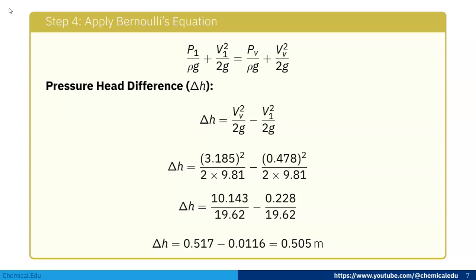Now we can apply Bernoulli's equation: P₁/(ρg) + V₁²/(2g) = Pv/(ρg) + Vv²/(2g). And z₁ = z₂ because it is horizontal. The orifice is placed horizontally, so z₁ = z₂.